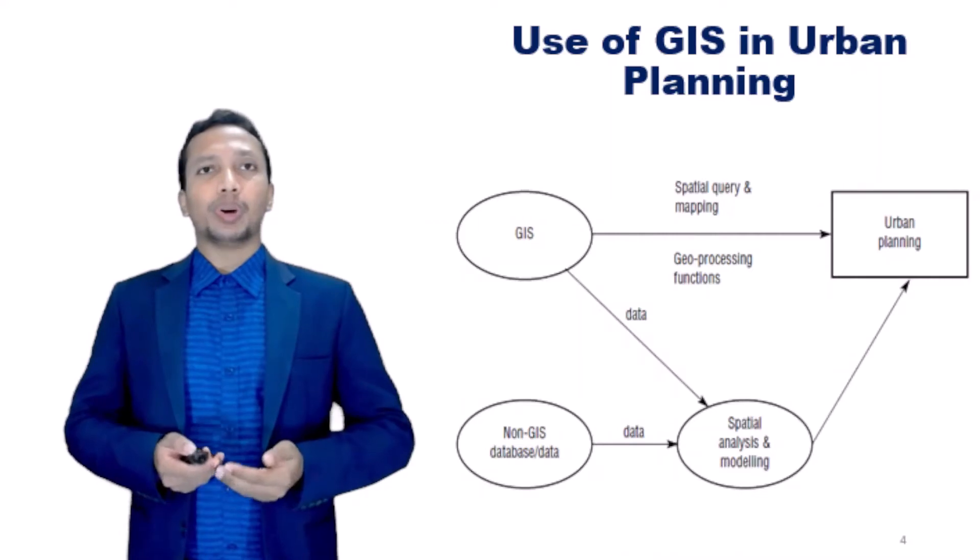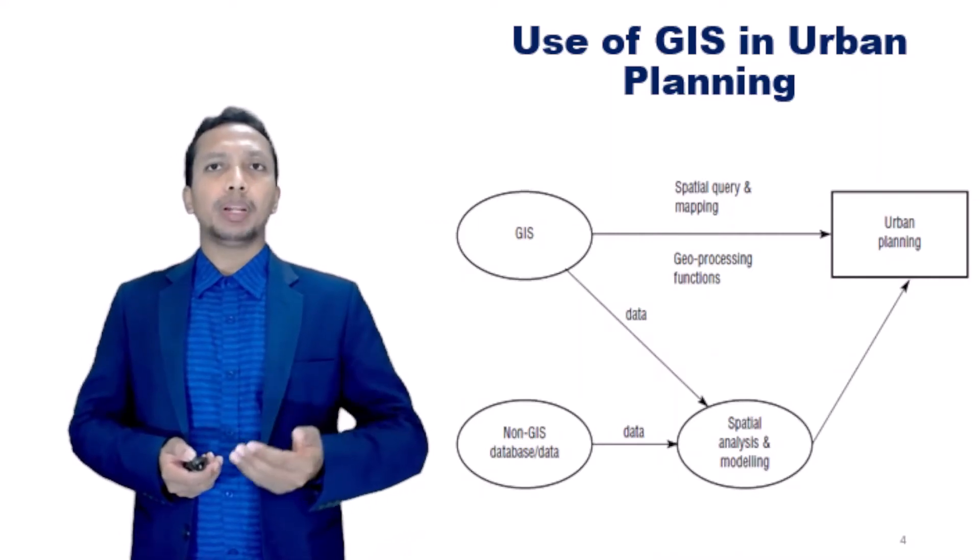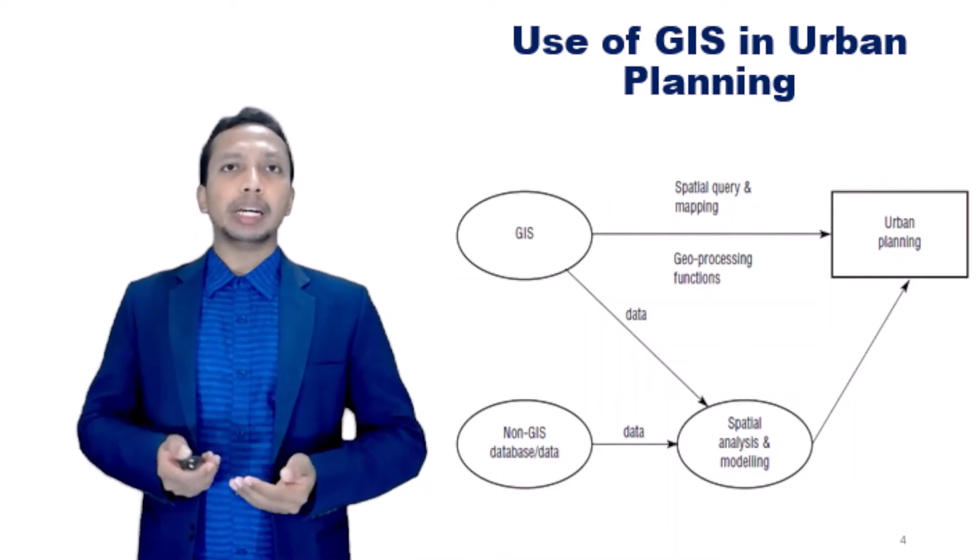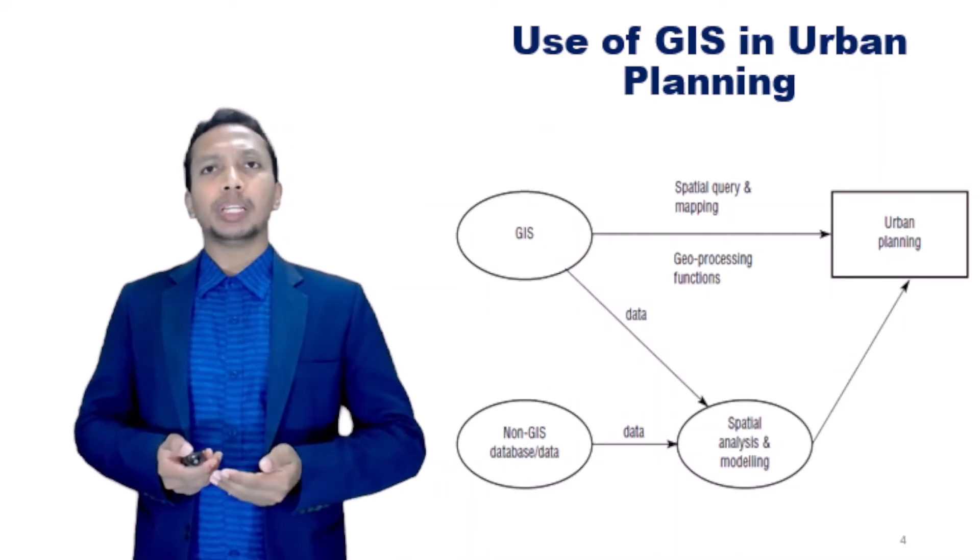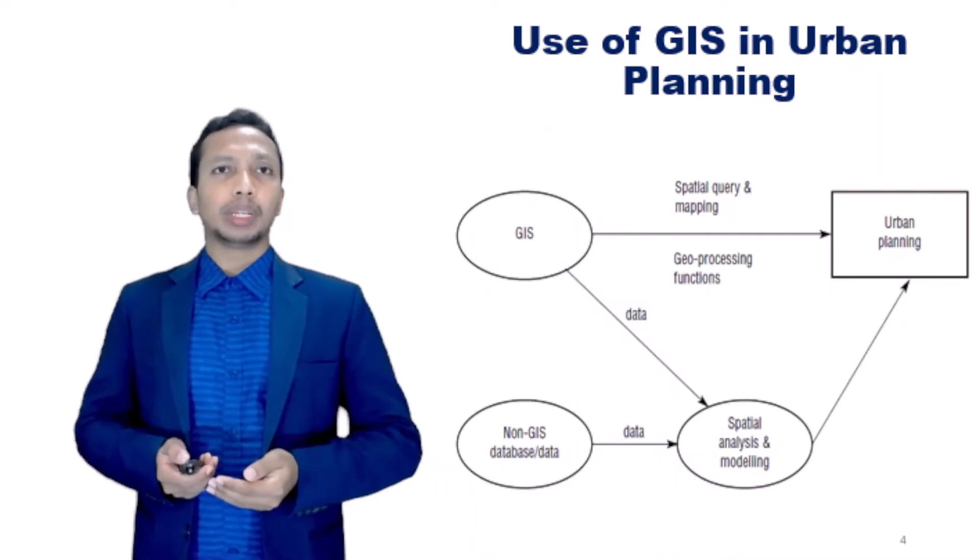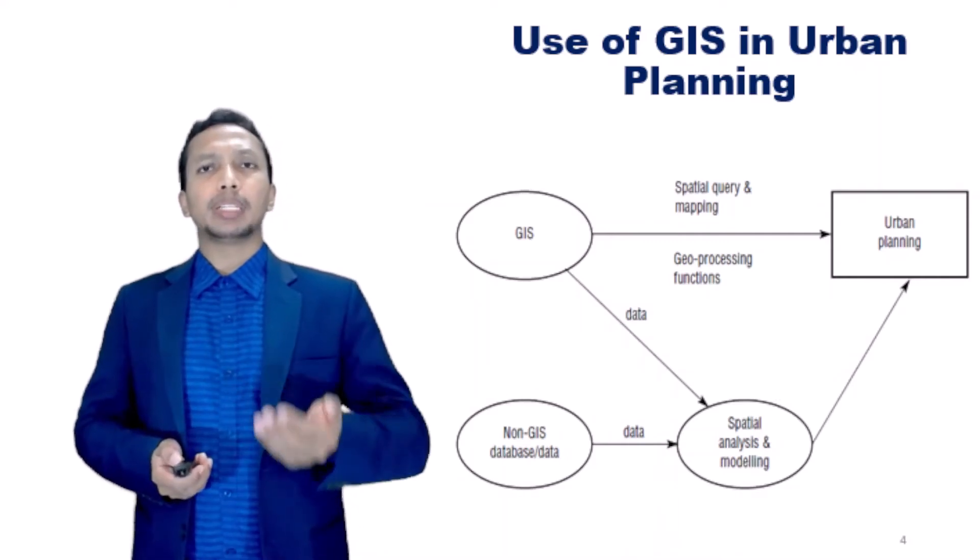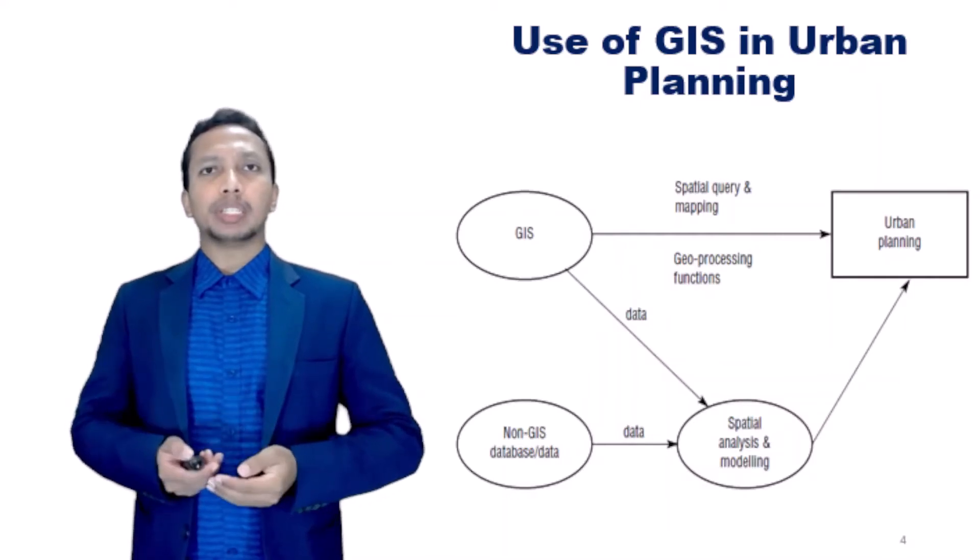GIS is just one of the formalized computer-based information systems capable of integrating data from various sources to provide the information necessary for effective decision-making in urban planning. Other information systems for urban planning include database management system, decision support system, and expert system.